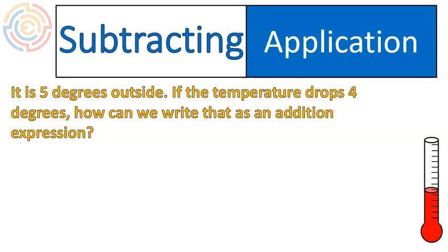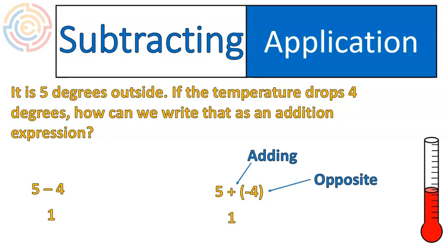The way I'm going to model this question is first I'm going to write it as a subtraction expression. Then I'm going to add the opposite to make it into an addition expression. Watch how I do that. Maybe this is the same way that you did it. I started out with 5 degrees and it dropped 4 degrees. That's 5 minus 4, which is 1. In this case, probably simpler to just leave it that way. But the question didn't ask you to do what was simple. The question asked you to write it as an addition expression. So we're going to change it to an addition expression that would look like this. 5 plus negative 4, adding the opposite. And 5 plus negative 4 gives us 1.